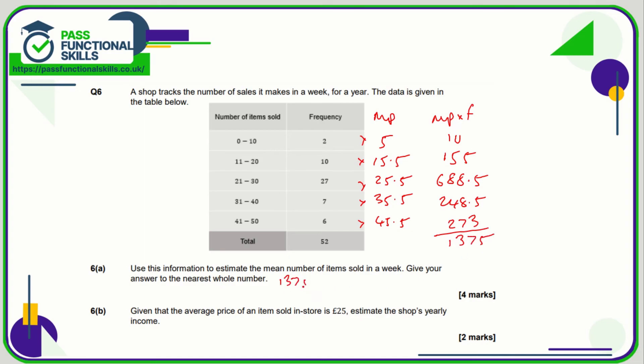So add this column up here and we get a total of 1375. So our estimated mean is going to be 1375 divided by the frequency total, which is 52, which comes to 26.44, or 26 to the nearest whole number.